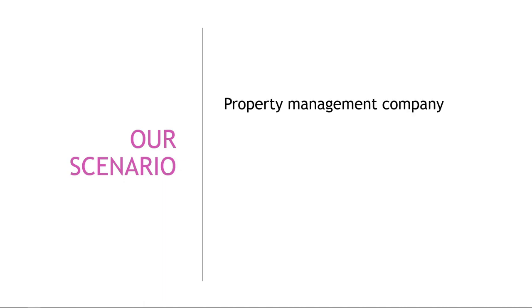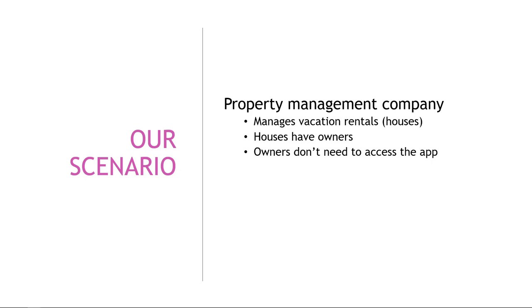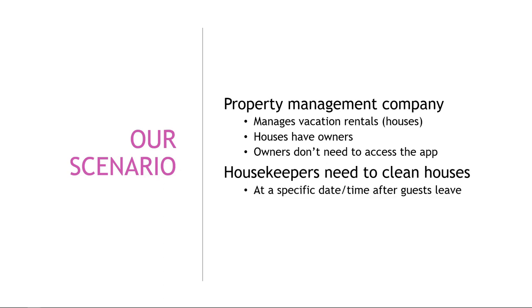Here's what we have so far for this scenario. We're dealing with a property management company. They manage vacation rentals or houses. These houses have individual owners, and the owners don't need to access the app. And then we have the housekeepers who need to clean the houses. This should happen at a specific date and time after the guests check out, and housekeepers will need access to the app so they can see their appointments and schedule for the day. So let's decide which entities we need — what are the things or objects involved in this scenario?